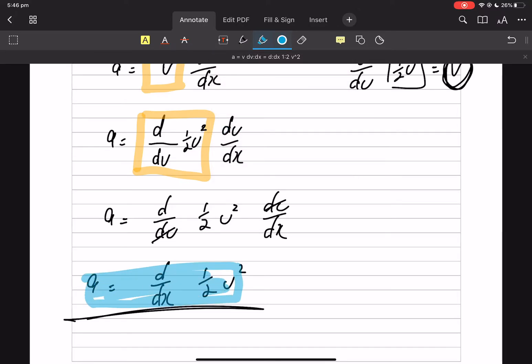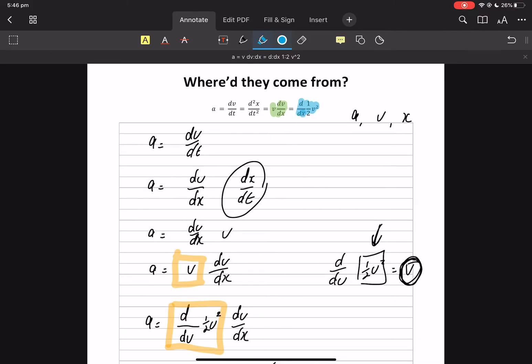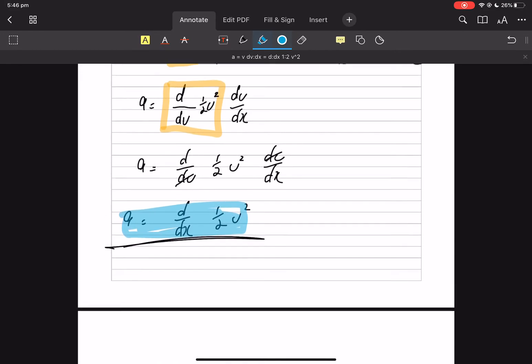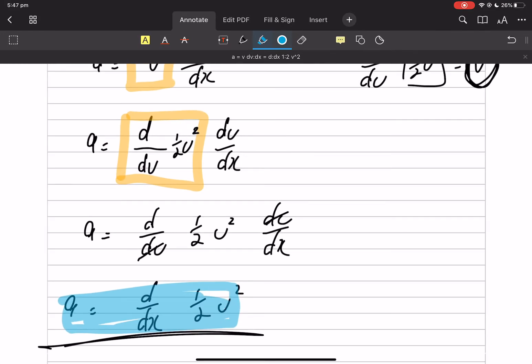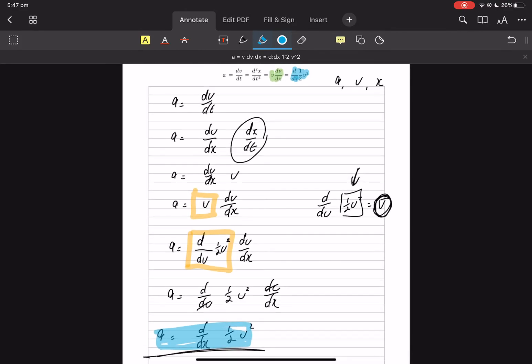That is the blue d/dx of a half v squared. Okay, that was super simple. That's where they come from, and we know how to use them.